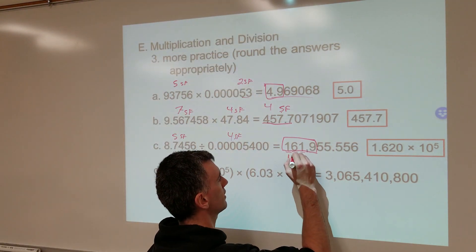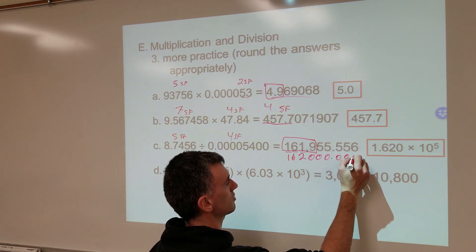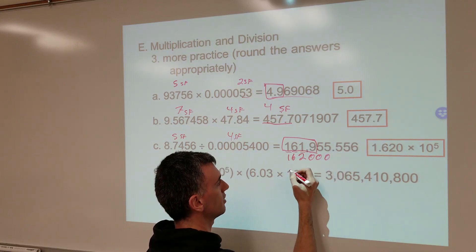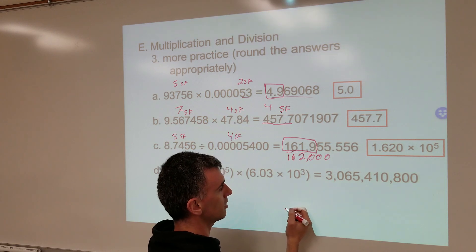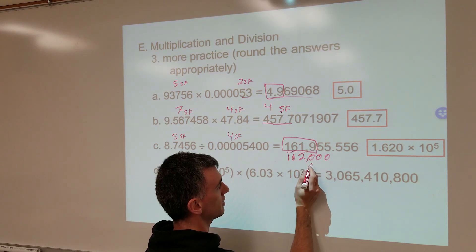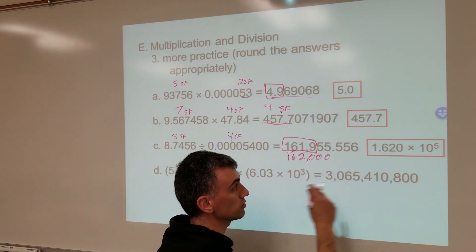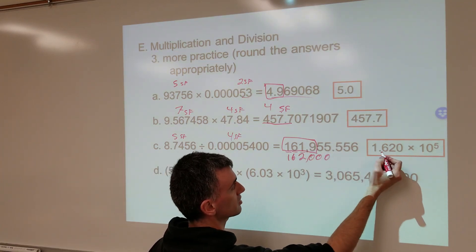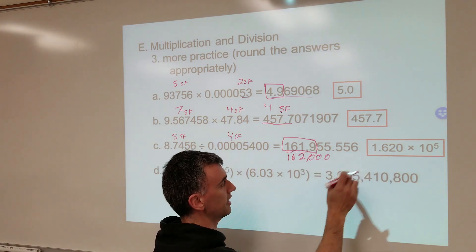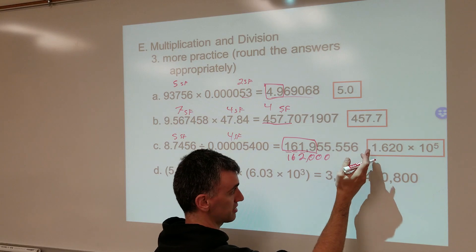Just to clarify that: 1,620 would be the rounded number — there shouldn't be anything after that. That's four significant figures, so convert to scientific notation. You have to move the decimal five times, and four sig figs means four significant figures are included in the scientific notation. That's why it looks like that — the number greater than a thousand has to be in scientific notation.